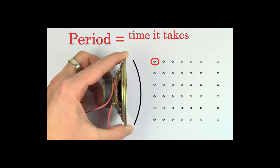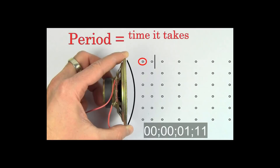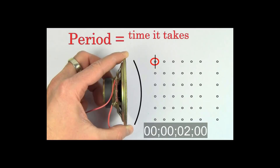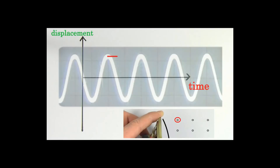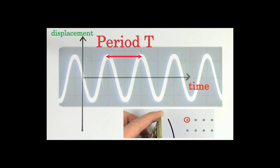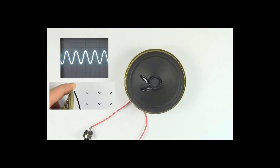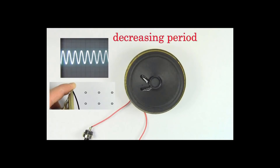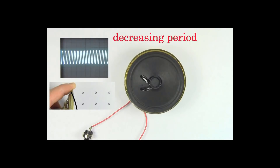Another key idea is the period of a sound wave. The period is defined to be the time it takes for an air molecule to fully move back and forth one time. We call this back and forth motion a cycle. We measure the period in seconds, and we use the letter capital T to represent the period. If we decrease the period, the time it takes for the air molecules to oscillate back and forth decreases, and the pitch of the sound changes. The less time it takes the air molecules to oscillate back and forth, the higher note that we perceive.